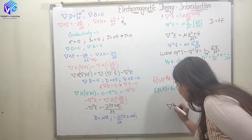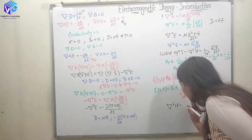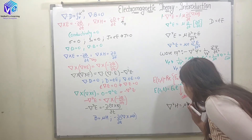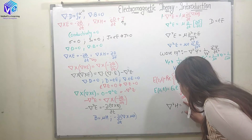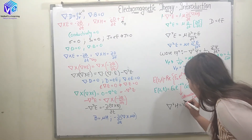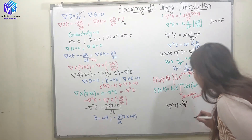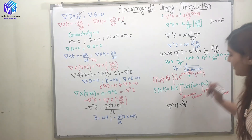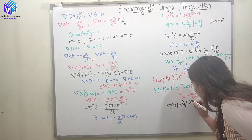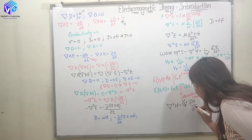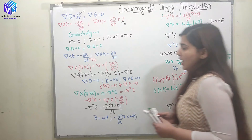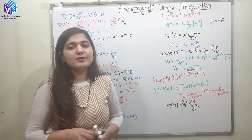For the magnetic field intensity, I can write a similar wave equation: ∇²H = (1/V_p²)(∂²H/∂t²). This is how I can represent the wave equation for the magnetic field.